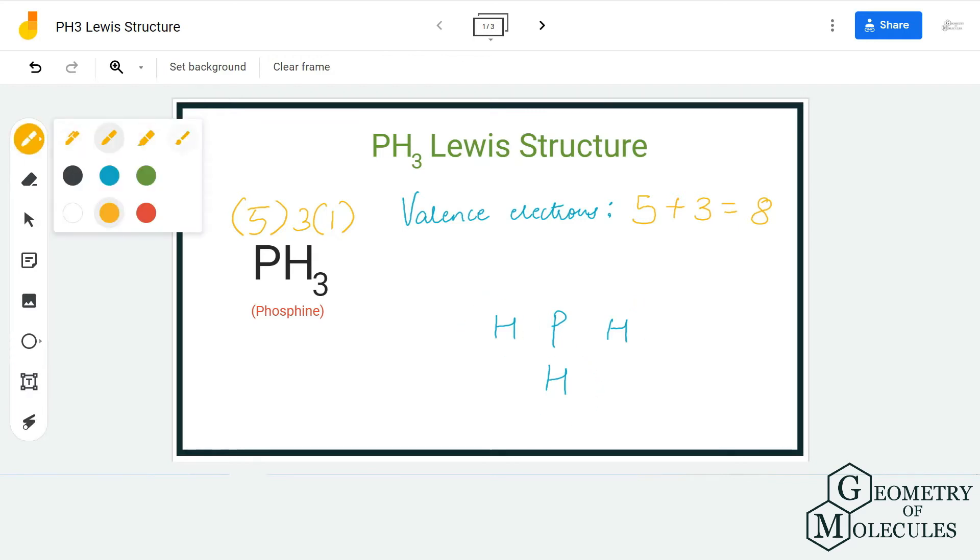To show a bond formation between phosphorus and hydrogen we are going to place a pair of electrons like this. So doing that we will be using up six valence electrons out of eight and we are now left with two more.